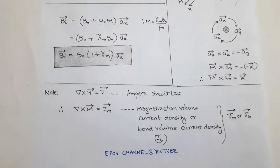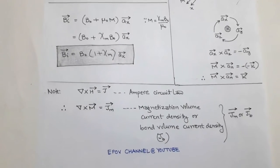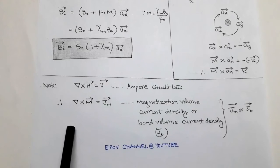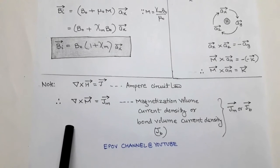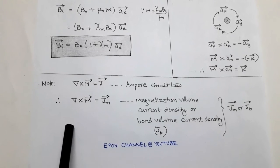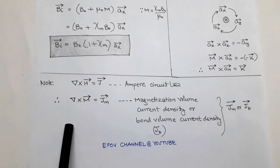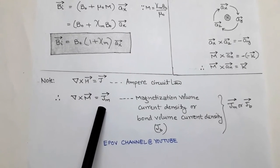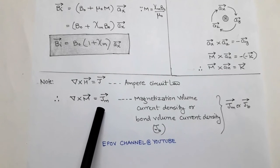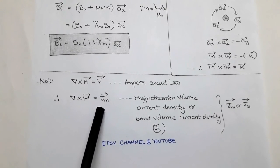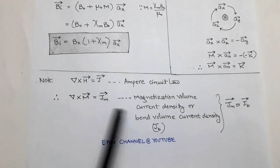Ampere's circuital law states that curl of H vector equals J vector. Similarly, when the magnetic material gets magnetized, we can write curl of M vector equals J_m vector, where J_m vector is called the magnetization volume current density, or simply the bound volume current density J_b.